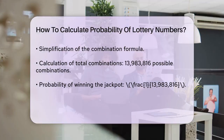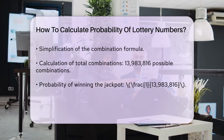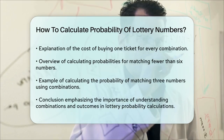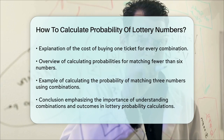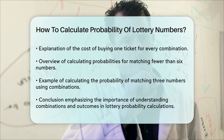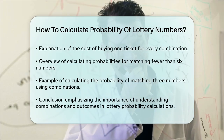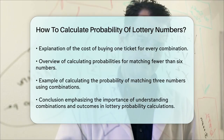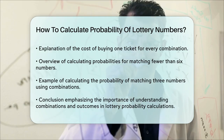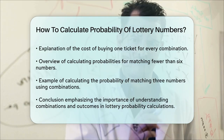For other prizes, like matching fewer than six numbers, the calculation involves determining how many ways you can match those specific numbers, and then dividing by the total number of possible combinations. For example, if you match three numbers, you calculate the number of ways to choose three winning numbers from the six drawn and three losing numbers from the 43 not drawn.